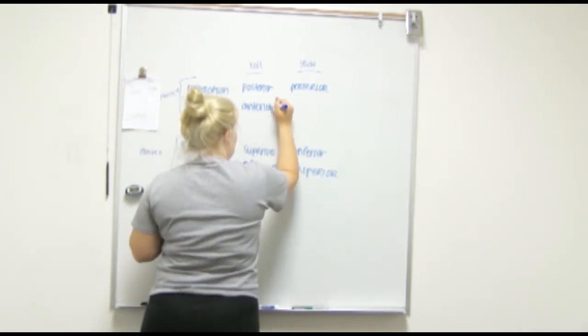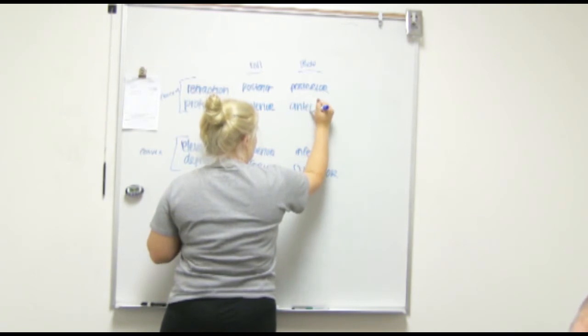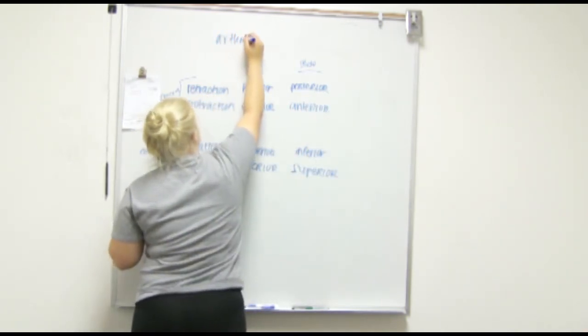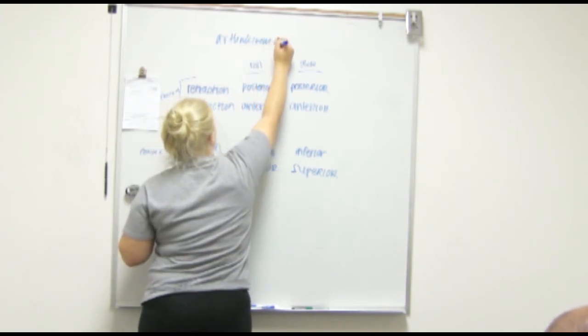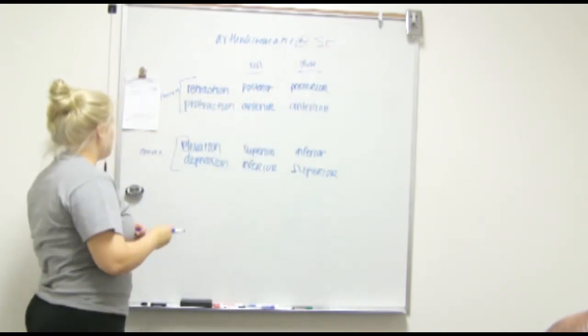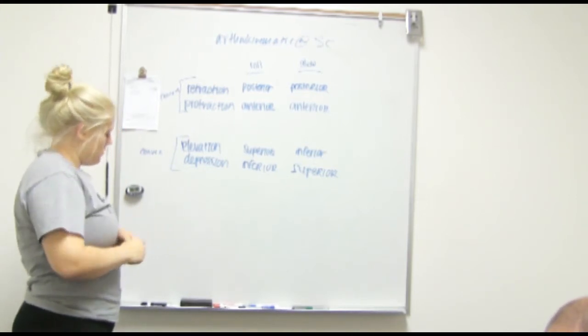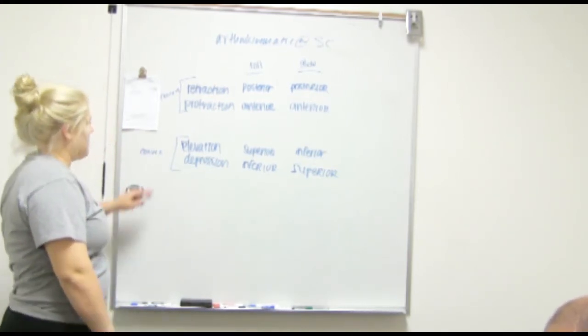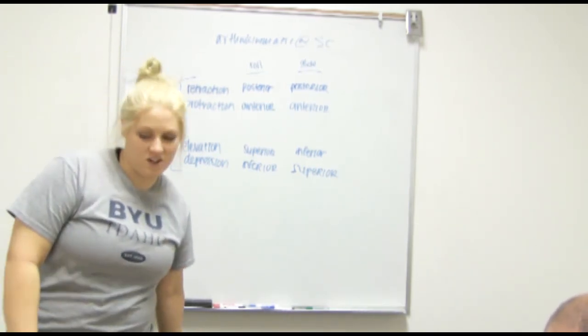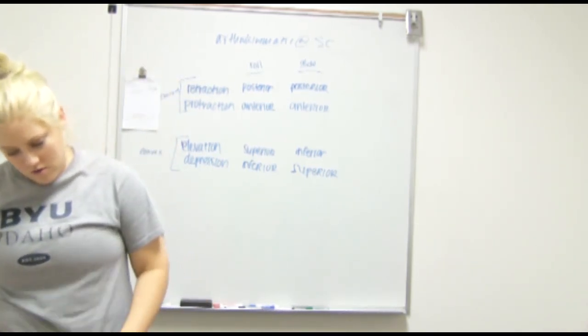Is that in that circle? Oh yeah, okay. So these are arthrokinematics at the sternoclavicular joint. So really you just need to memorize which ones are convex concave and which ones are concave convex, and then you can kind of figure out the rest of it on your own.